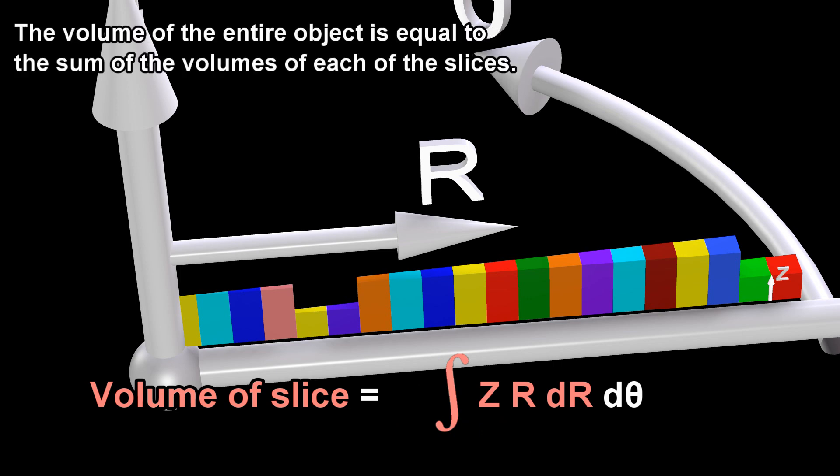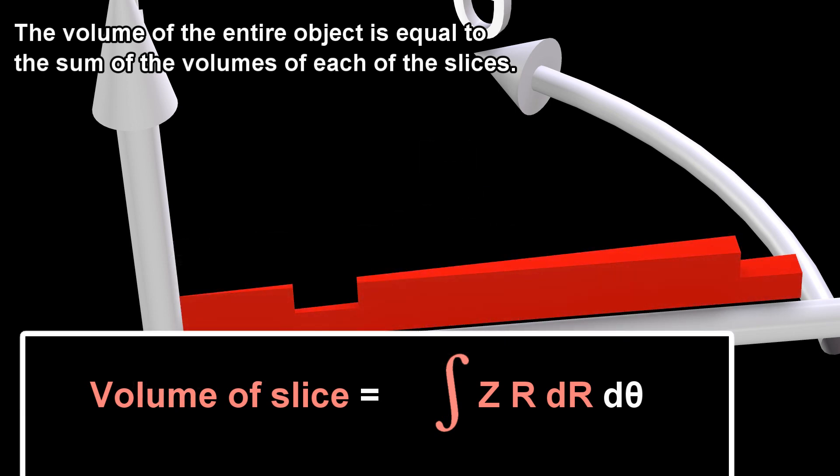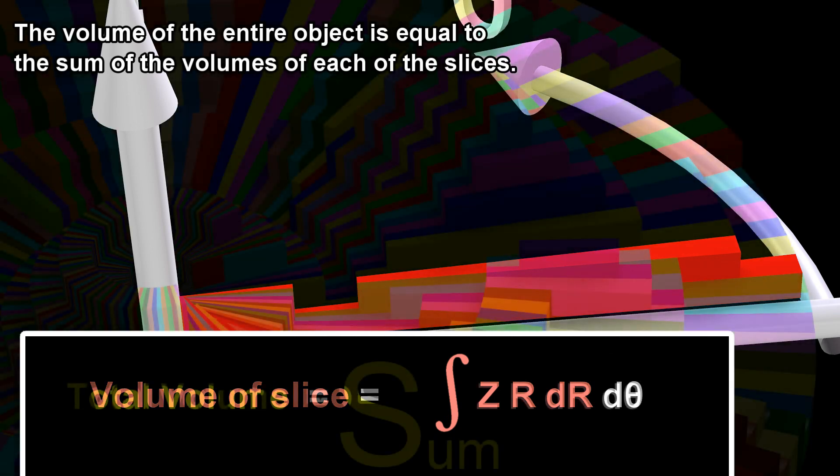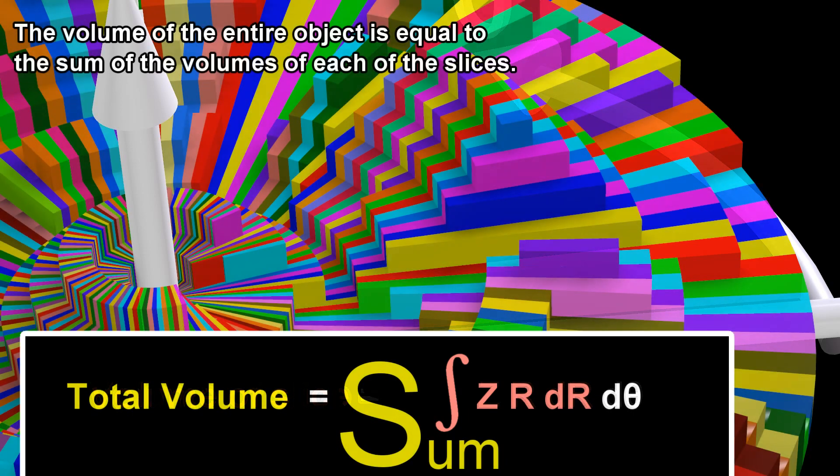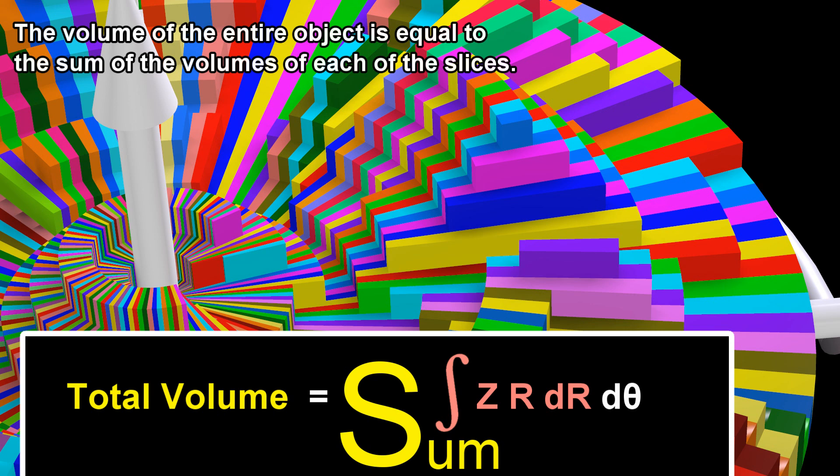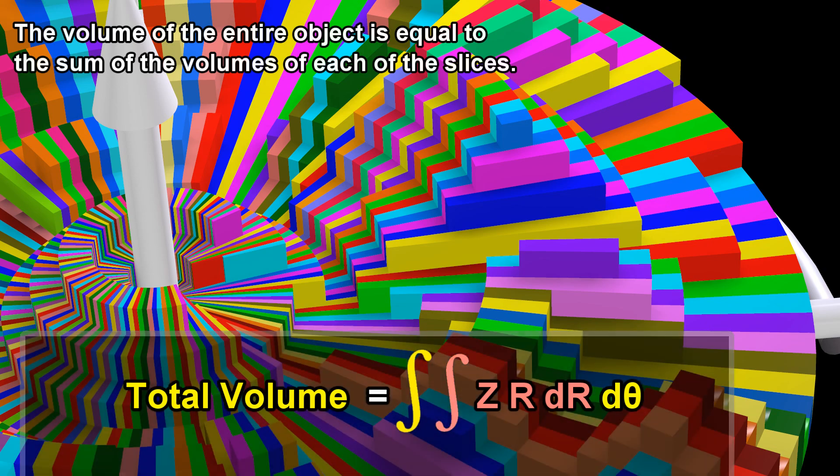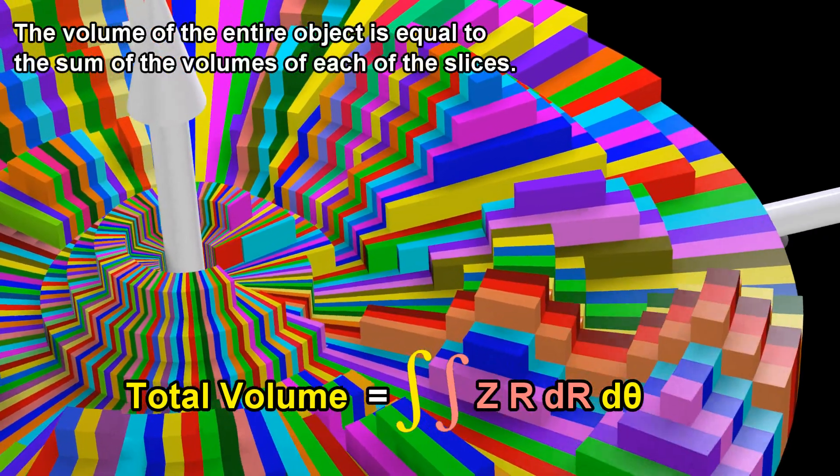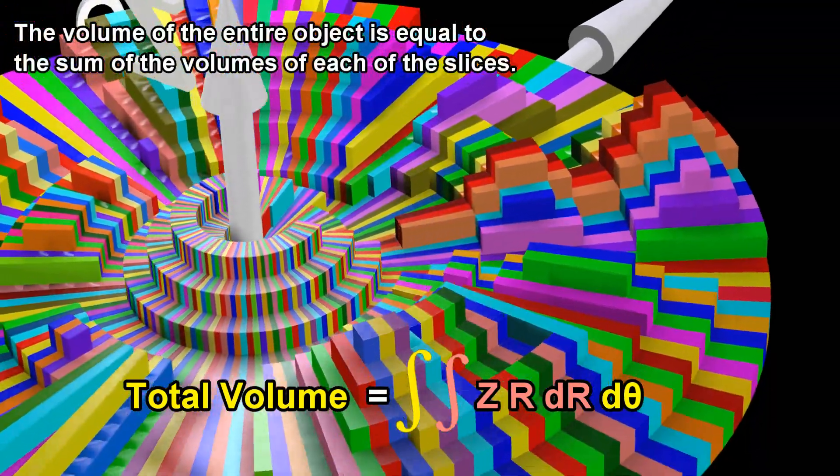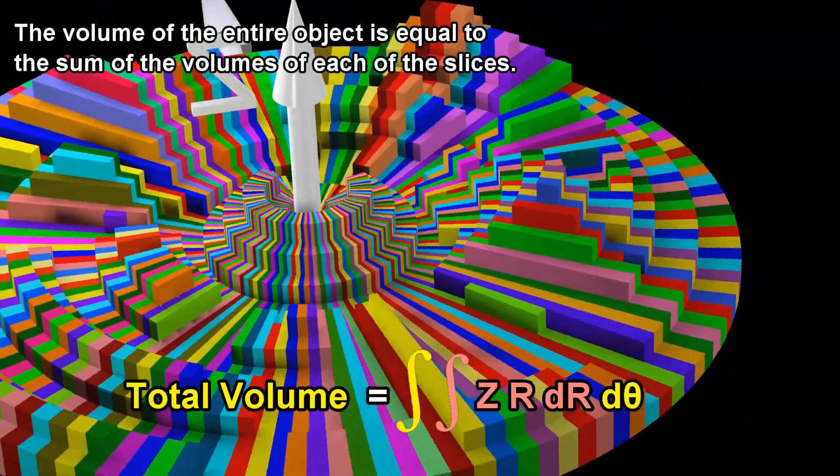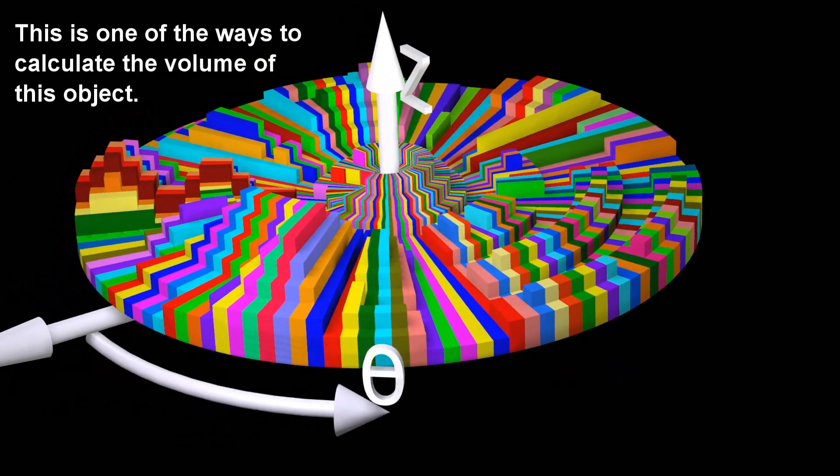The volume of the entire object is equal to the sum of the volumes of each of the slices. This is one of the ways to calculate the volume of this object.